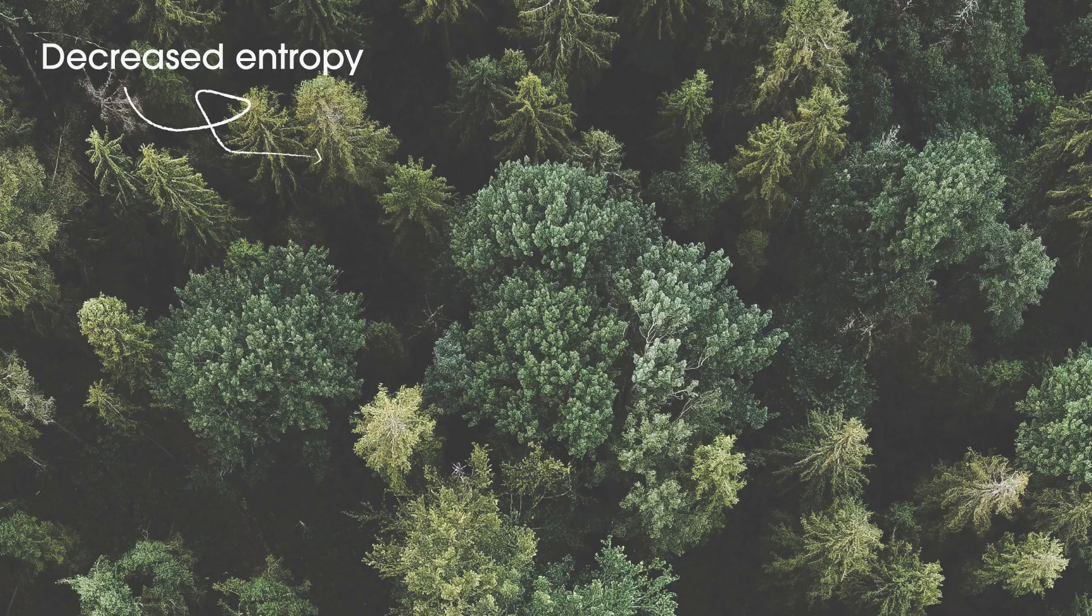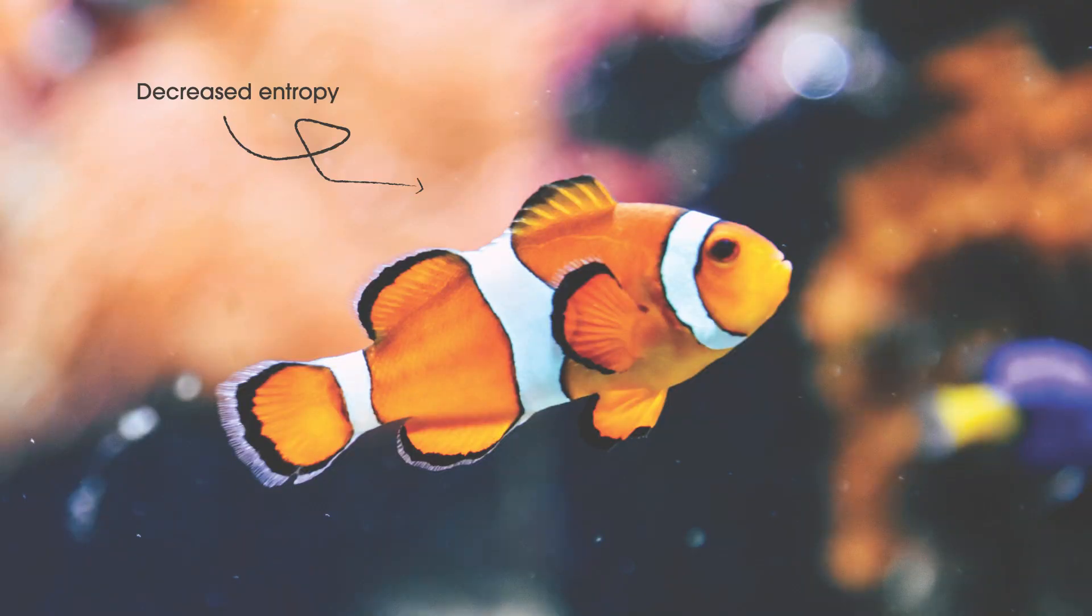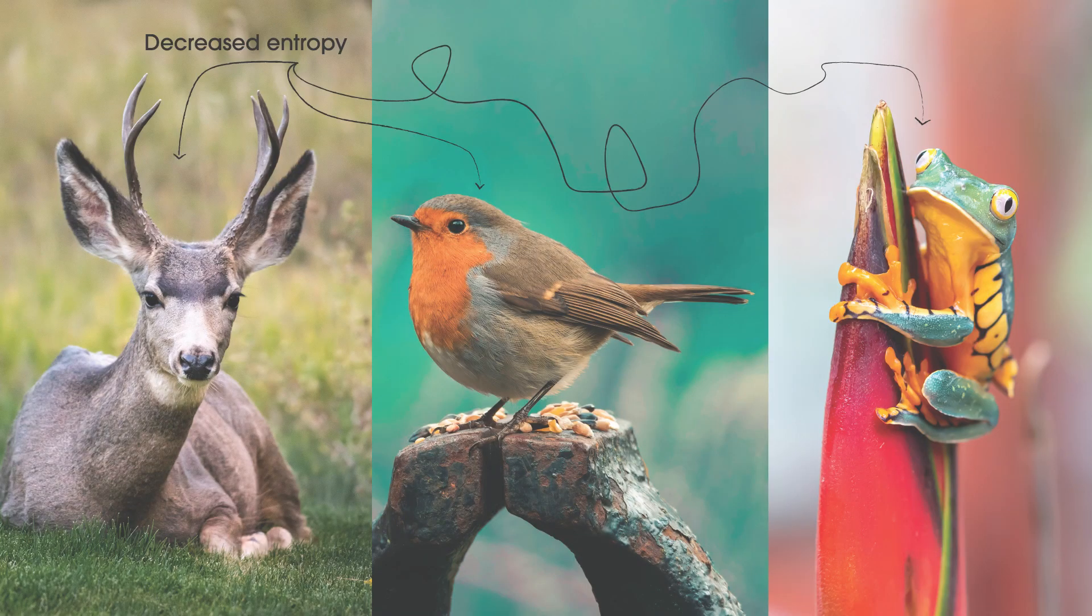Life is an example of decreased entropy, because particles have to take precise positions in order for cells, organs, and systems to function. Could this be a violation of the second law?